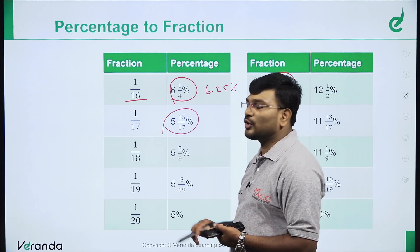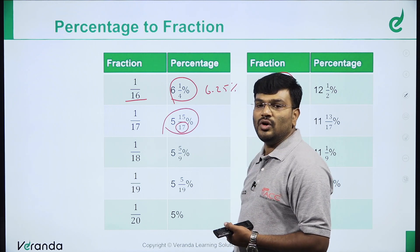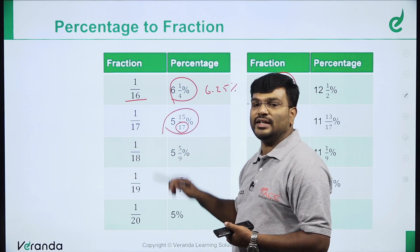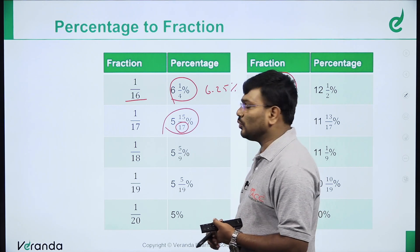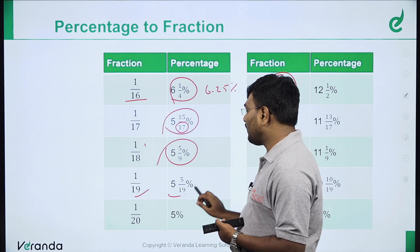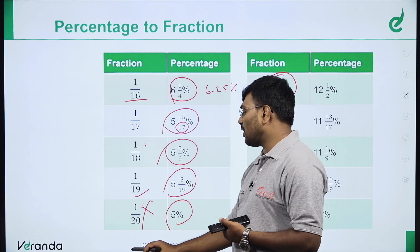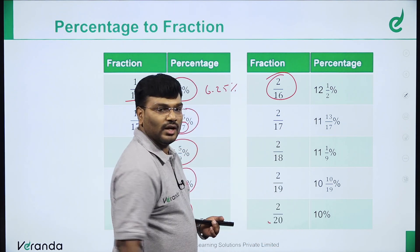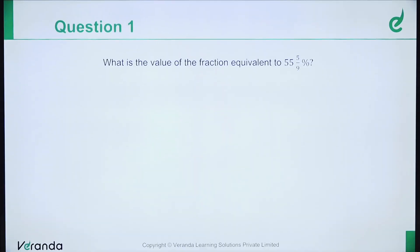For fractions with prime number denominators like 17 and 13, you need to remember the number directly related to that prime. 1 by 17 and 1 by 13 must be memorized. 1 by 18 is 5 5/9 percent. 1 by 19 is 5 5/19 percent. 1 by 20 is 5%.